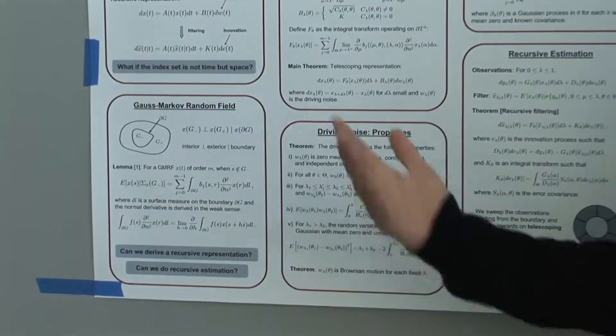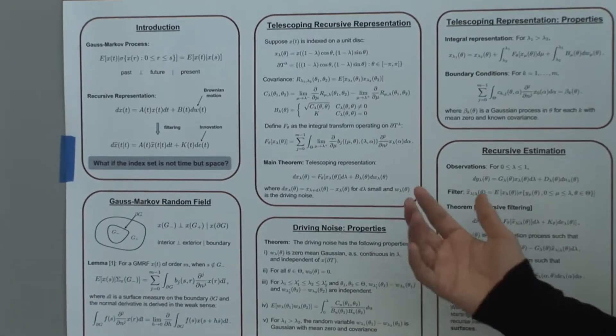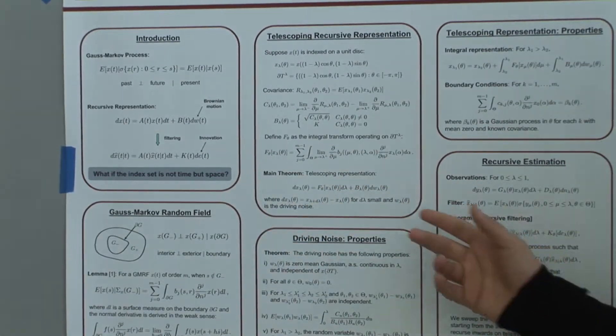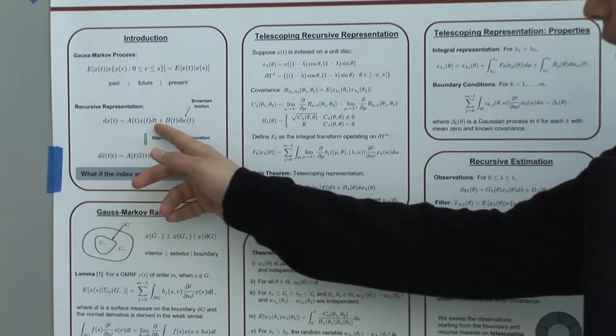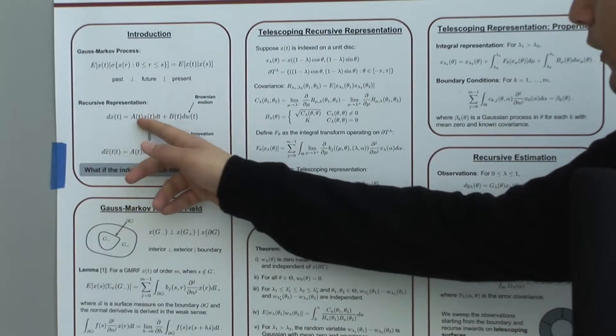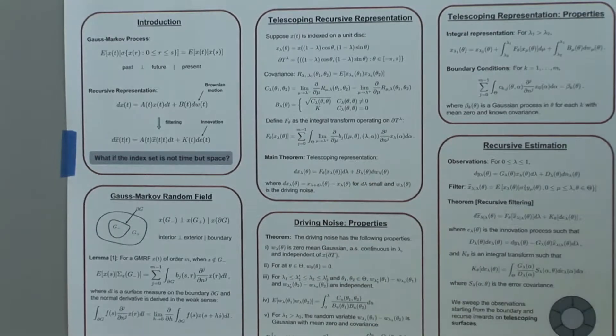derive these 1D recursive representations? Our main theorem says that we can. This recursive representation is given by a stochastic differential equation in this form. The key difference between the 1D form and the higher dimensional form is that instead of this product, we have a linear functional over